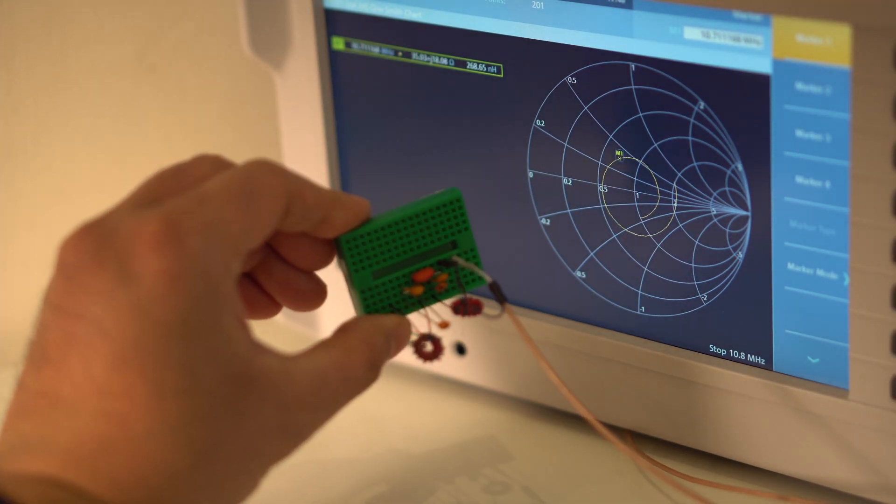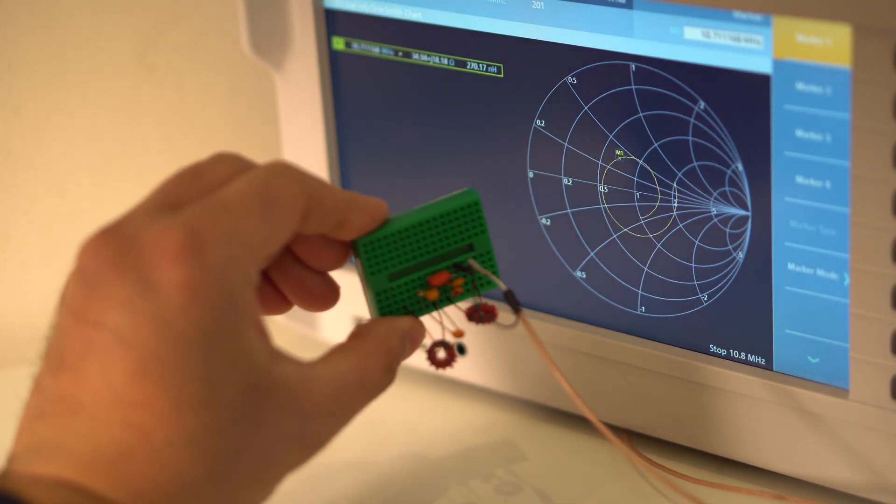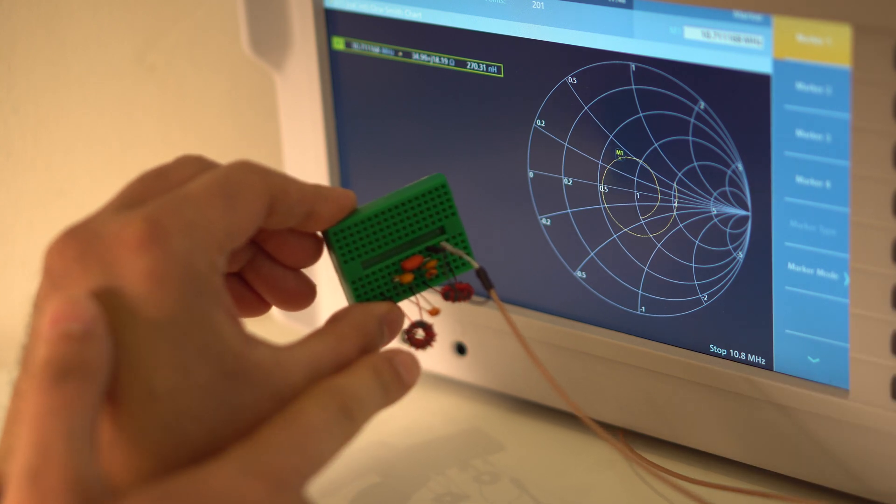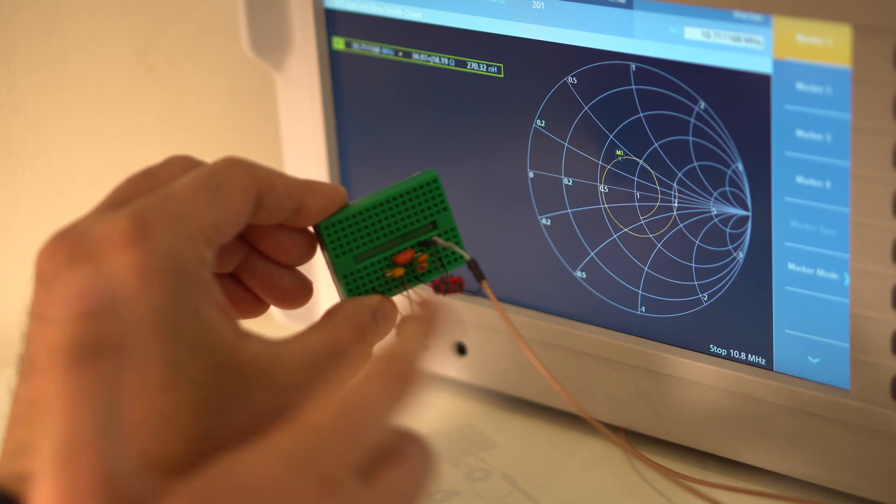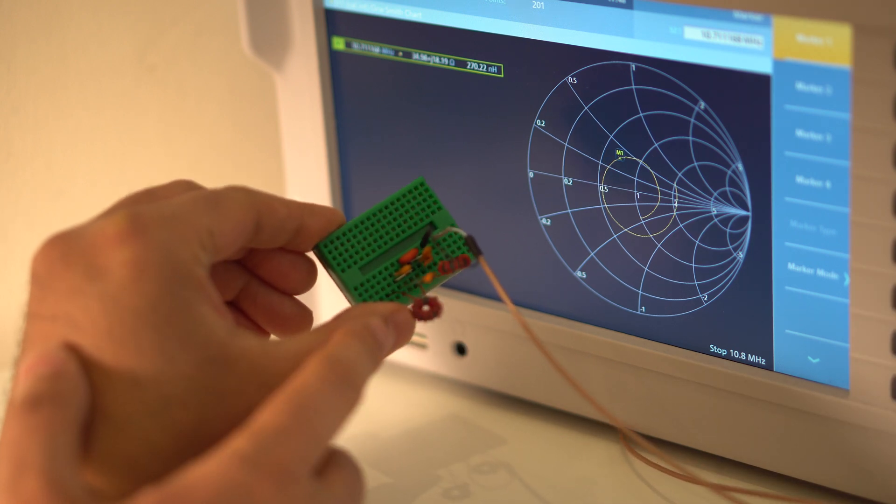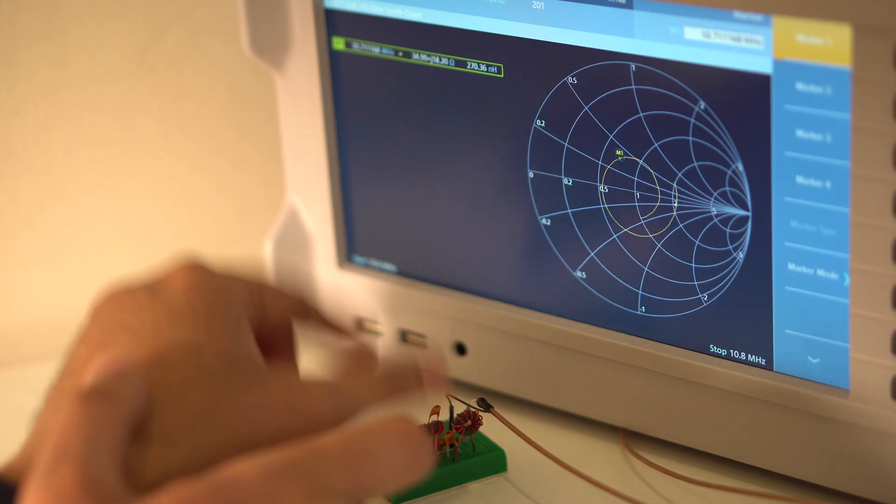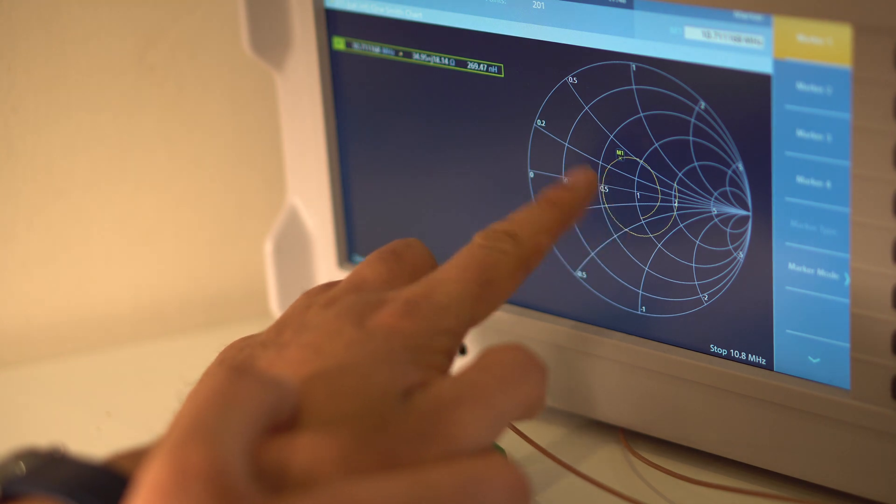Okay, so now the same circuit is repeated on the output of the filter as well. So I've got the inductor in series and the capacitor in parallel, the same component values. And now you can see that the M1, the marker has moved. It's no longer in the center.